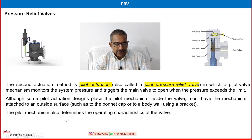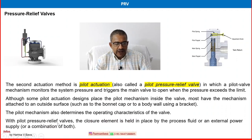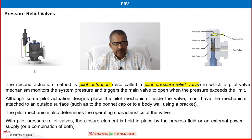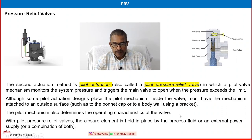With a pilot pressure relief valve, the closure element is held in place by the process fluid, an external power supply, or a combination of both. Normally in the majority of cases, the pilot mechanism uses process fluid as the power source.